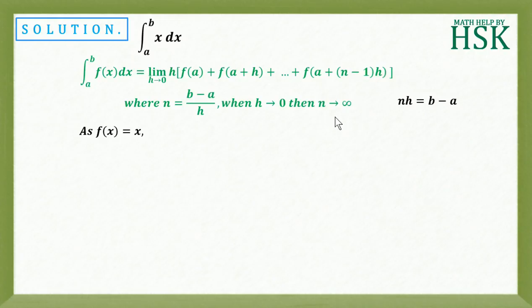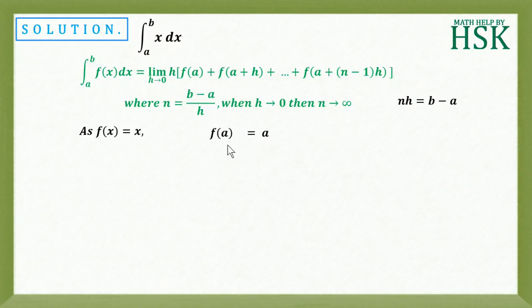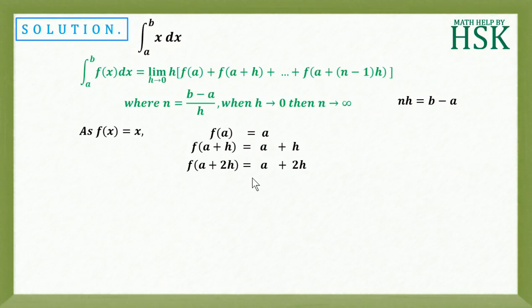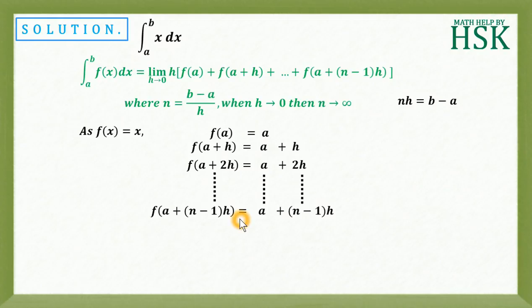Since f(x) = x, f(a) = a. Next, f(a+h) = a + h. Similarly, f(a+2h) = a + 2h, and so on, up to f(a + (n-1)h) = a + (n-1)h.